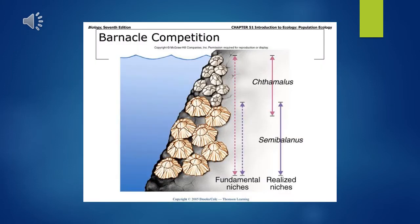Here we have a classic example from the intertidal zone about two different barnacles. Both of them have a fundamental niche — that is where they would grow if nothing else was there stopping them. Chthamalus would be able to live all the way from the surface of the water downward, but when in competition with Semibalanus it can only live in the upper area, because below that it will be outcompeted by the more aggressive or larger barnacle. So in competition, one species will often have a smaller realized niche than its fundamental niche, as competition limits the available space for the organism.